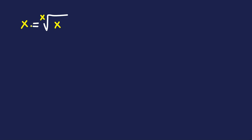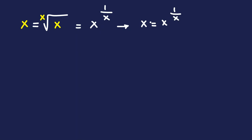We are going to solve this equation — we want to find x, considering only real numbers. We can define x as the x-th root of x, which means it equals x to the power of 1 over x. So we conclude: x = x^(1/x).